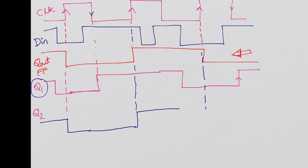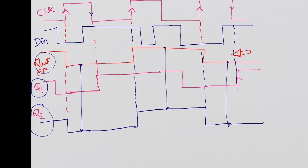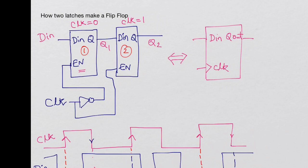Q2 continues to stay high. At the next rising edge it sees that Q1 is low, so it follows Q1 until the falling edge, then it remains low because once the clock falls it no longer tracks Q1. Now if you compare Q2 with Q_out_FF, these two signals are the same. You get exactly the output you expect from a flip-flop. I hope this makes it clear that two latches in series with opposite enables will make a flip-flop.